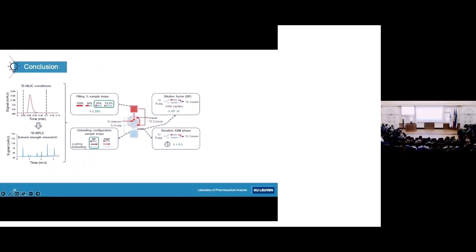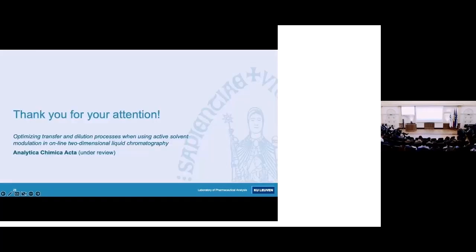In conclusion, when combining HILIC with reverse phase liquid chromatography you have a mobile phase compatibility problem, which can be addressed using active solvent modulation. There are multiple parameters to optimize — dilution factor, ASM phase duration, sample loop filling percentage, and unloading configuration — and optimizing these leads to a second dimension chromatogram with much better peak shapes. We are also working on a publication currently under review where you can find more information about this topic.